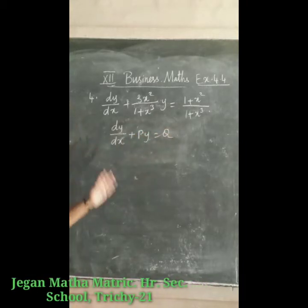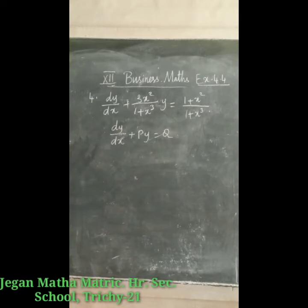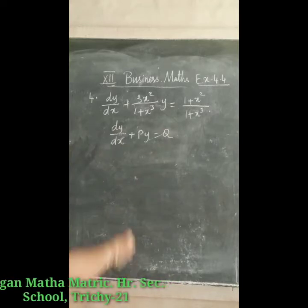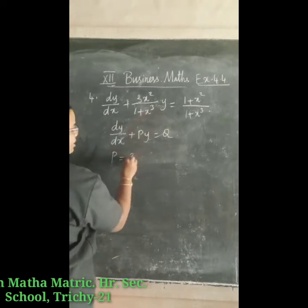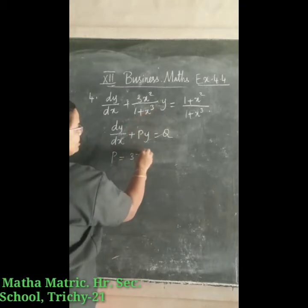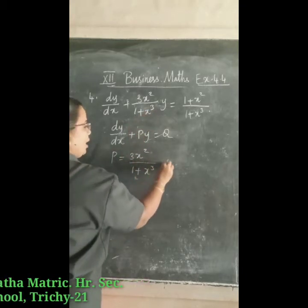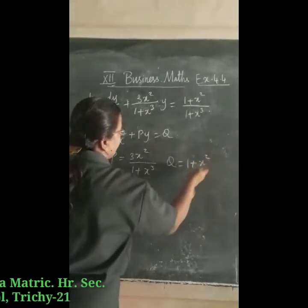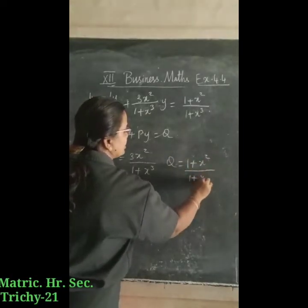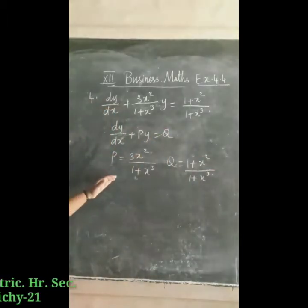It is in the form of the linear equation. Let us consider what is p. p is equal to the coefficient of y, that is 3x² divided by (1 + x³), and q is equal to (1 + x²) divided by (1 + x³).